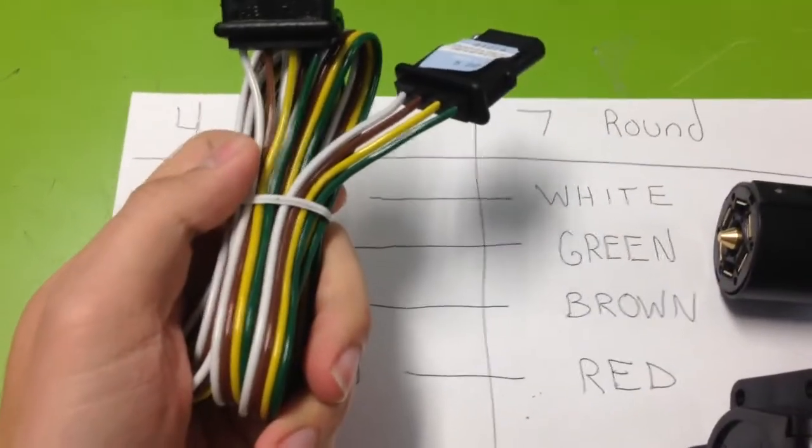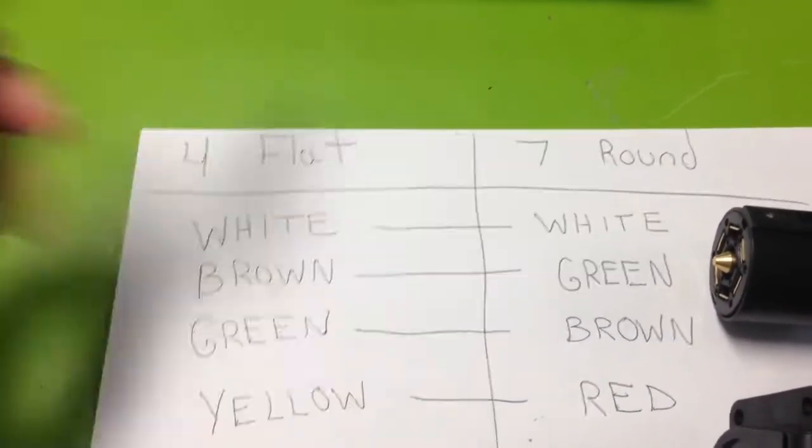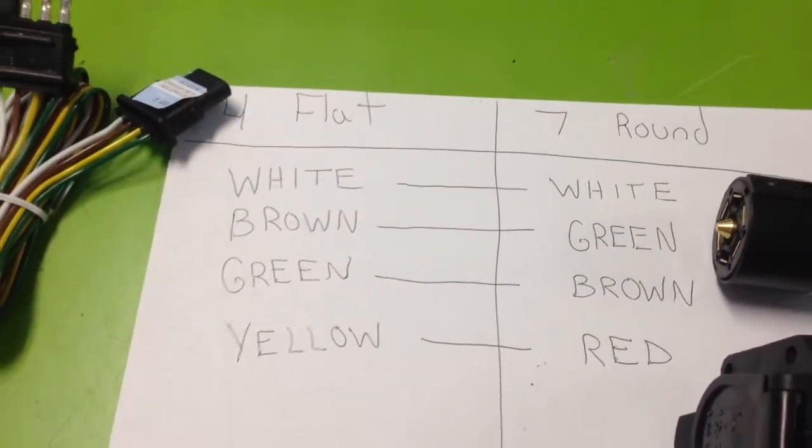On the four flat, you have four wires: white, brown, yellow, and green. Right there, white, brown, yellow, green.